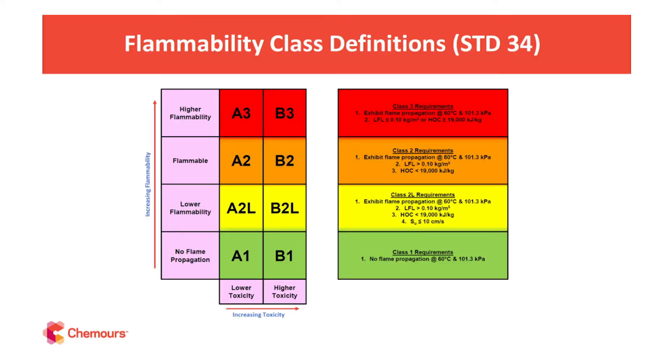To summarize: the classification system uses A or B — lower toxicity or higher toxicity. Moving on to the second part, it's a number designation combined with the letter that addresses flammability risks. In simple terms, 1 is non-flammable, 3 is very highly flammable or explosive, and 2 is somewhere in the middle. But there's a lot going on in that area, so let's go a little deeper.